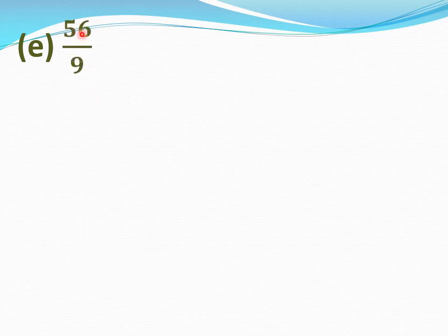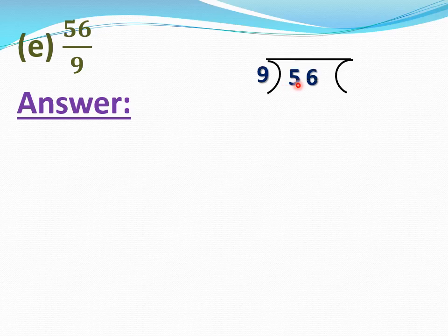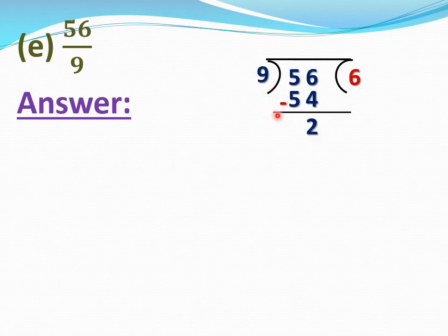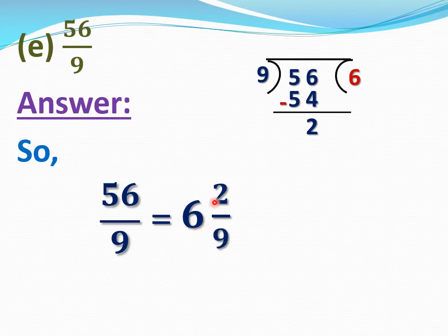Now E part, 56 by 9. We have to change 56 by 9 into a mixed fraction. Divide 56 by 9. 9 sixes are 54; subtraction gives remainder 2. Hence quotient is 6, remainder is 2, and divisor is 9. Write quotient as whole number, remainder as numerator, and divisor as denominator. So 56 by 9 equals 6 whole 2 by 9.